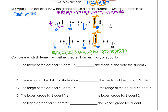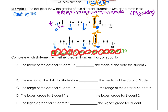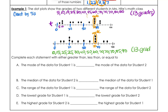Now I'll count how many numbers are in each data set. Student one has 13 grades, and student two also has 13 grades. I'll verify that matches the dots on the plot — counting confirms 13 for each. Perfect, so we've written down all our numbers and can start answering the questions.